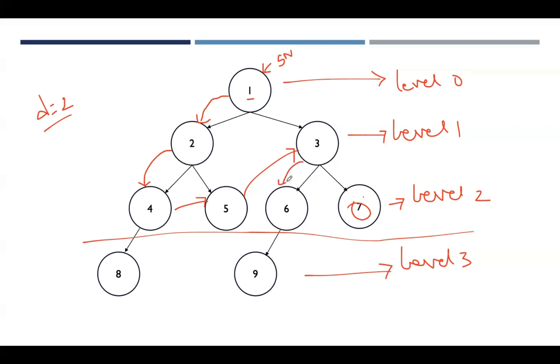From 3, go to 6. Again, 6 is having one adjacent vertex which is at level 3, so don't consider that. From 6, backtrack to 3, and then from 6 move to 7.